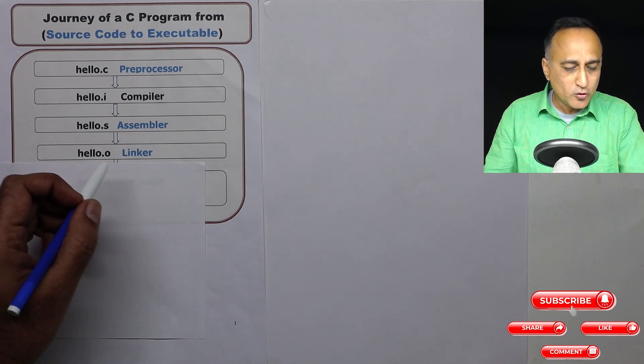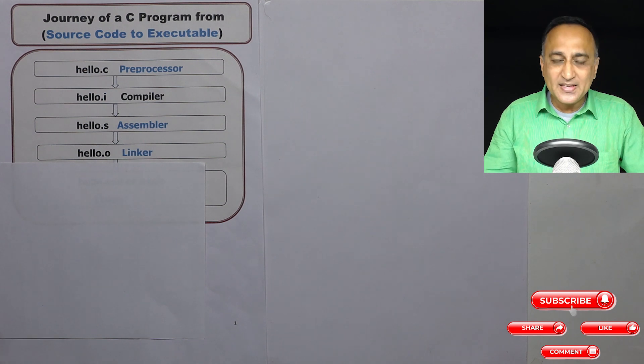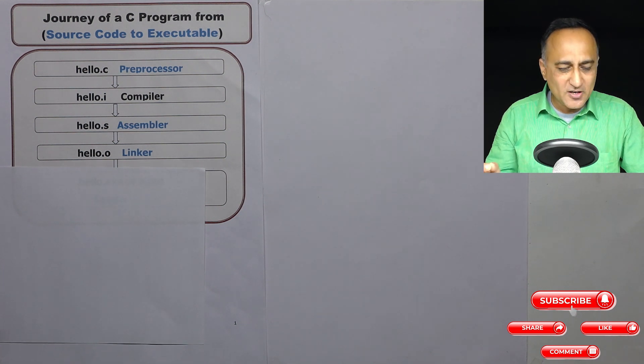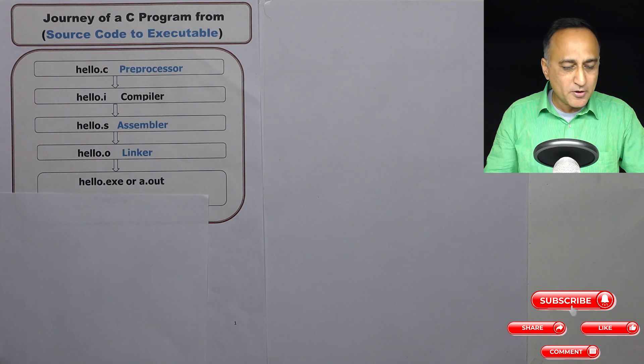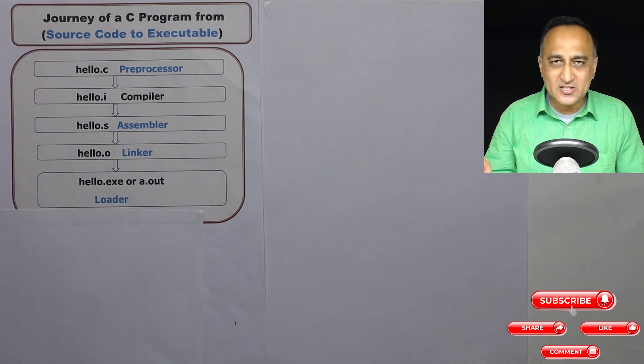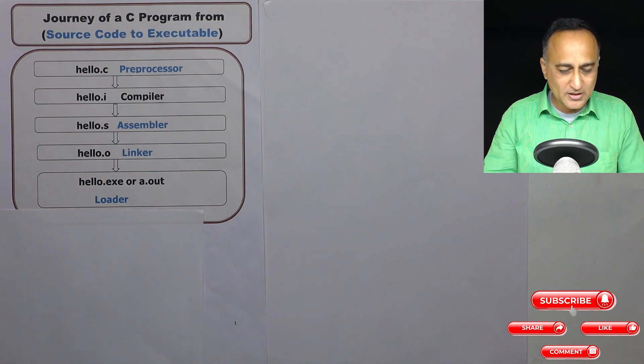So this hello.o goes to the linker. Then the linker takes your program or hello.o developed by you and the library code of printf and joins it along with your code producing a file called hello.exe or a.out on Linux or Unix. Hello.exe is the name of the file produced on Windows and a.out is the name of the file produced on Linux or Unix.